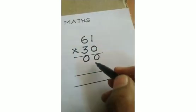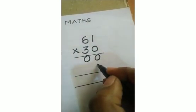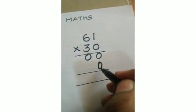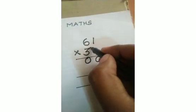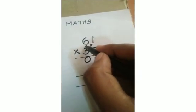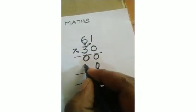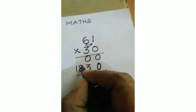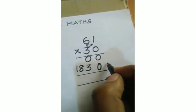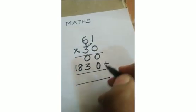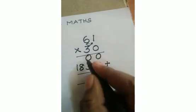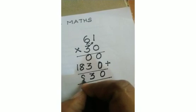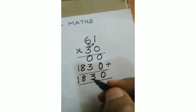So before going to multiply with 3, you write 0 in the ones place. Then you multiply 3 with 1 and 6. So 3 into 1 is 3, 3 into 6 is 18. Then you add: 0 plus 0 is 0, 0 plus 3 is 3, then 8, 1. Now your answer is 1830.